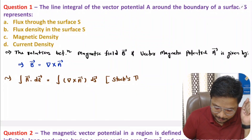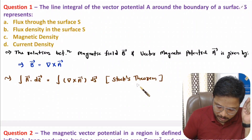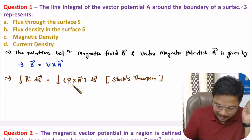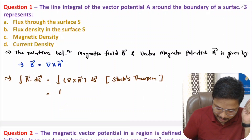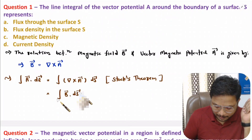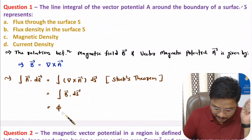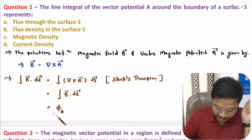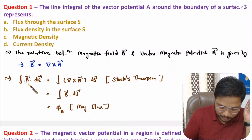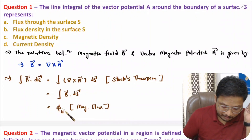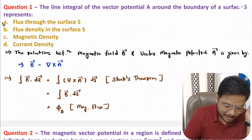Now here, del cross A is the magnetic field. So we have the surface integral of magnetic field, and the surface integral of magnetic field is magnetic flux. Therefore, the line integral of vector magnetic potential is magnetic flux.